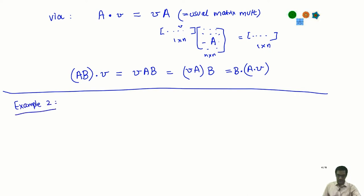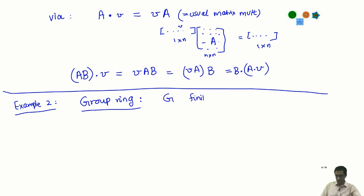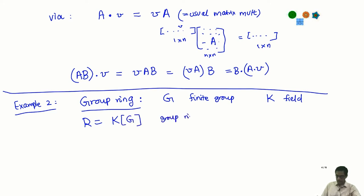Example 2: take the ring R to be a group ring. Recall from the lectures on rings that given a finite group G and a field K, the group ring R = K[G] is defined as follows. It is a K-vector space with basis {1_g : g ∈ G}. A typical element looks like Σ a_g · 1_g, and addition is componentwise.